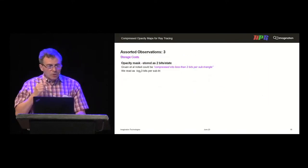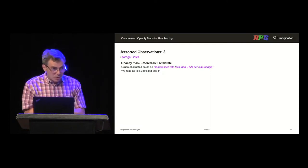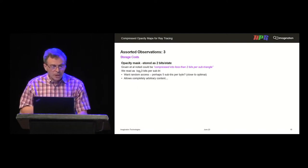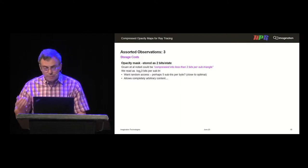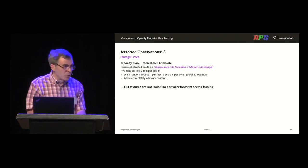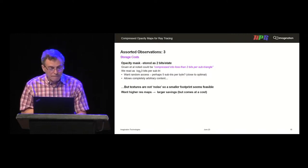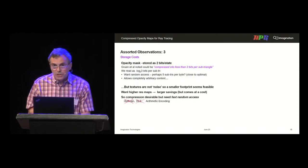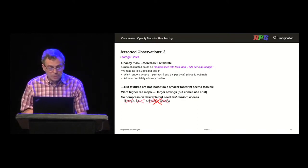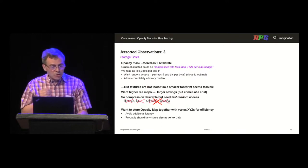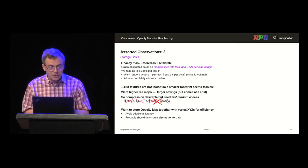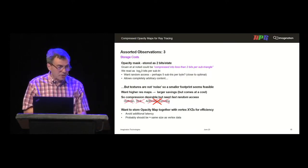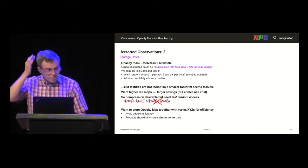Gruen et al. stored the map as two bits per state and noted it could be compressed into less data — we read that as meaning log-three bits per sub-triangle, so you could store five sub-triangles per byte. But textures are rarely noise, so a smaller footprint seems feasible. You want higher resolution for greater savings, but that comes at a storage cost. Compression is desirable, but you need fast random access, ruling out many schemes. We also felt the opacity map should be stored together with the vertex XYZ data to avoid additional latency, and should be roughly the same size as the vertex data.